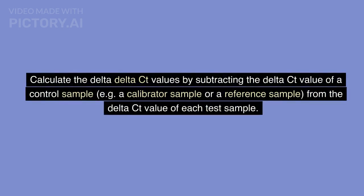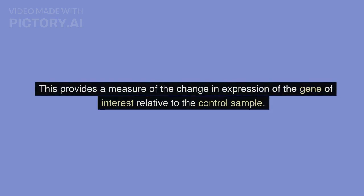Calculate the ΔΔCT values by subtracting the ΔCT value of a control sample, for example a calibrator sample or a reference sample, from the ΔCT value of each test sample. This provides a measure of the change in expression of the gene of interest relative to the control sample.